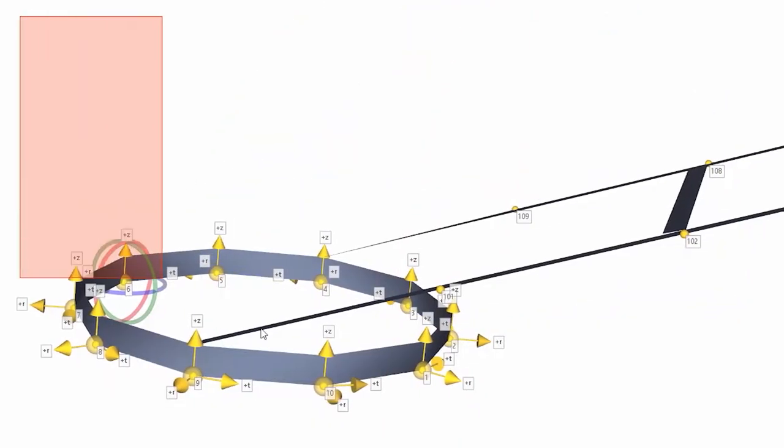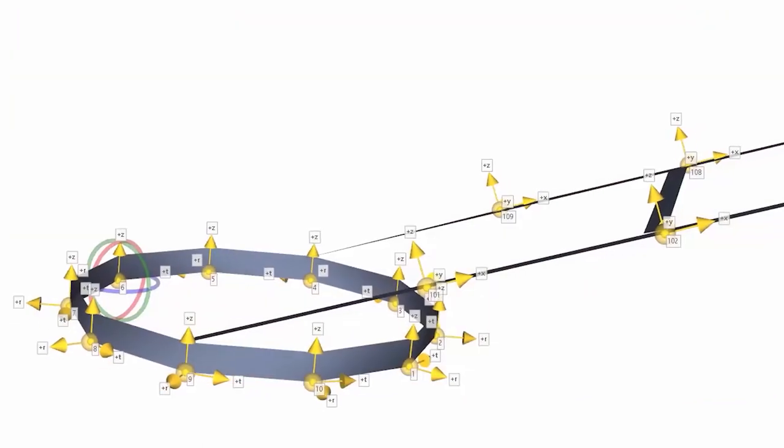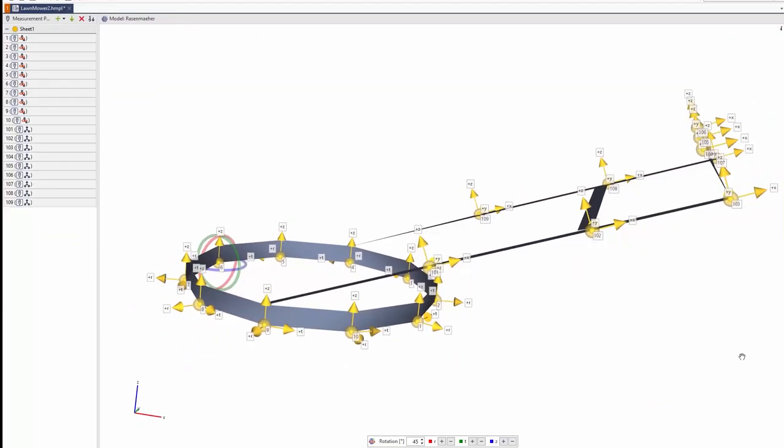And the cool thing is, you can use both coordinate systems within the same model. So the first step is done. We have to find all the points we want to measure, give them numbers and give them a suitable coordinate system to all of these points. Now we are ready to measure.